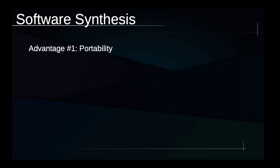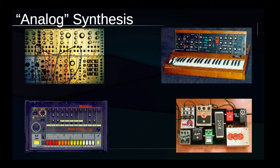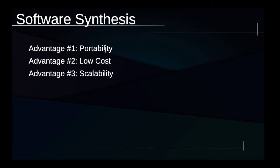This has lots of advantages. Advantage number one, relative to analog synthesis, is that it's portable. Another advantage is that it's often much lower cost. A third advantage is that software synthesis is scalable. If we want another module in our modular synthesis rack, we have to shell out more money for an additional module that takes up more space. But in the world of software, scalability is usually just a matter of clicking somewhere or adding an extra number to a piece of code. We can have many, many synthesis components without necessarily paying extra costs.